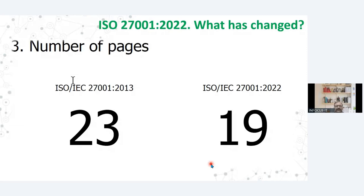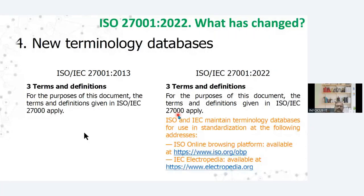In the previous version there were total 23 pages in the 27001 standard. Now the number of pages has also been reduced and in the new version only 19 pages are there. The fourth change is the terminology database. In clause number 3 there are some additional terms and definitions that have been specified, and they include the ISO browsing platform now available online and on Electropedia also. Earlier the same was not mentioned, although using Wikipedia you could always go back and search.